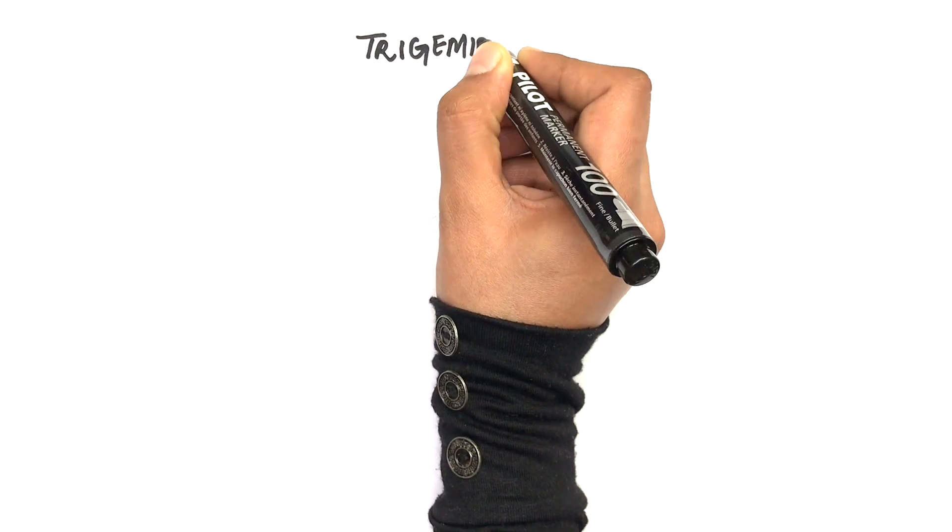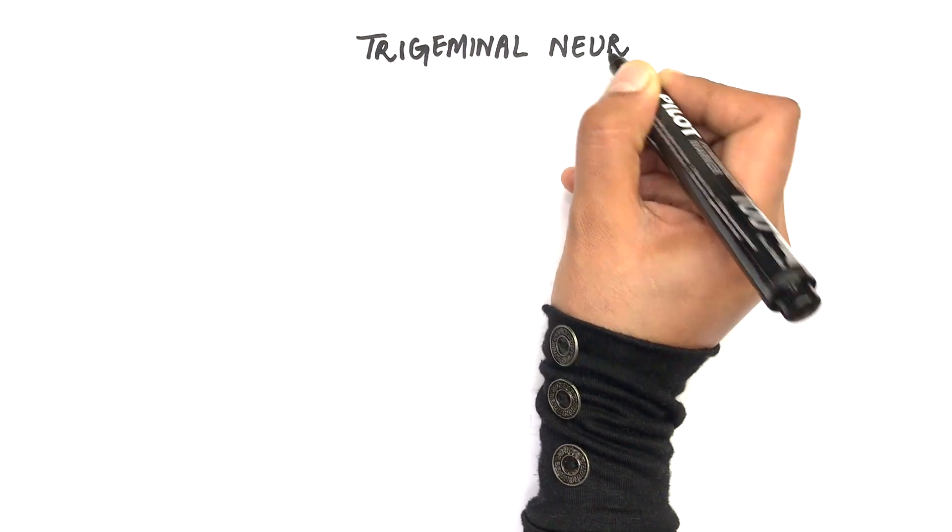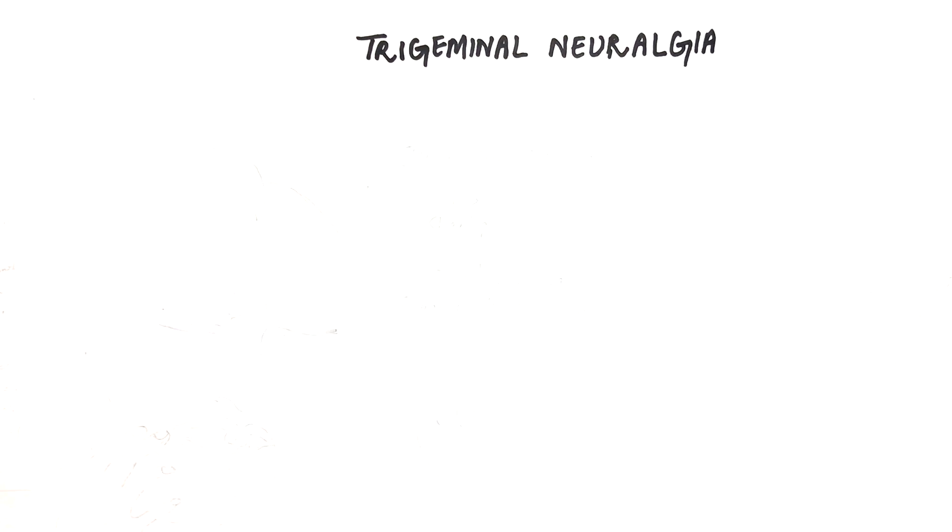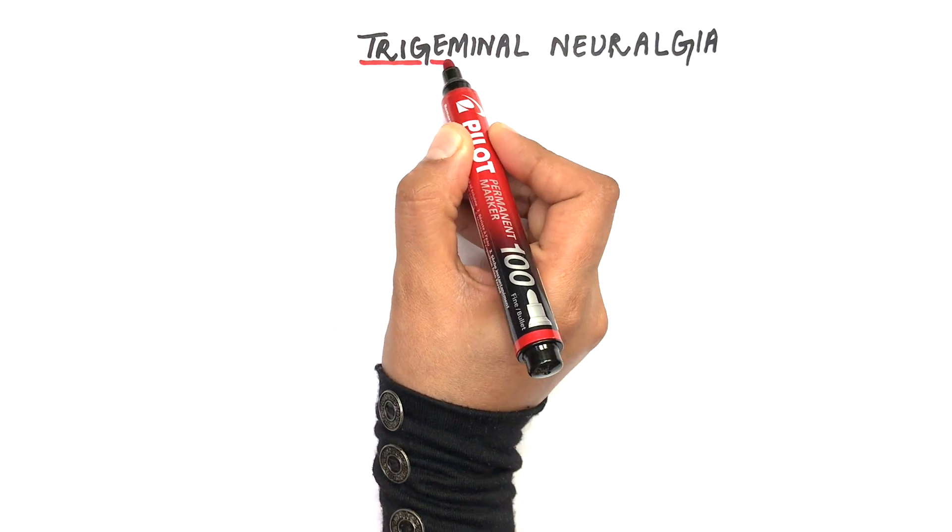Today's video is about trigeminal neuralgia. Neuralgia can be defined as pain along the distribution of a nerve. Therefore, trigeminal neuralgia is pain along the distribution of the trigeminal nerve.